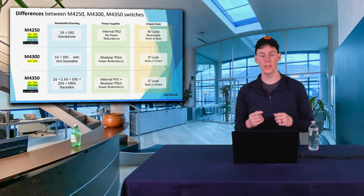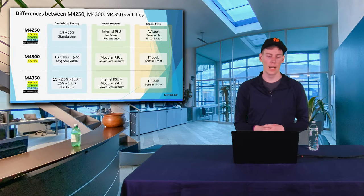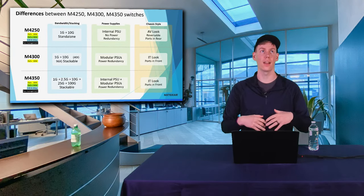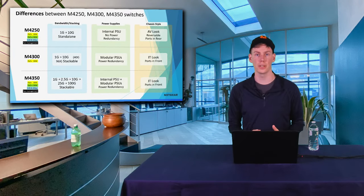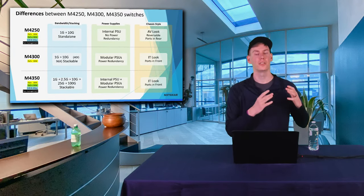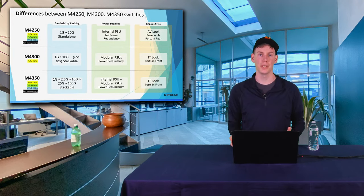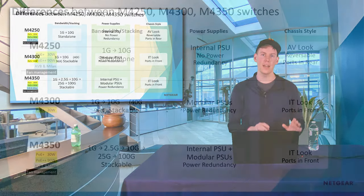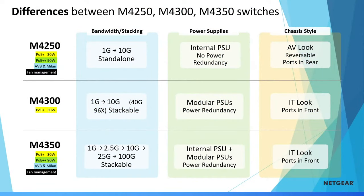Netgear has the M4250, M4300, and M4350 lines. Many features are the same across all of them — they all have the same user-friendly interface, the ability to set different profiles on each port, and compatibility with the N-Gage software. The M4250s are available in PoE, PoE Plus, and PoE Plus Plus configurations. They can have 1 gig and 10 gig ports. There is an internal power supply with no way to add more power, so whatever total power delivery it offers is fixed. All the ports are on the back of the unit.